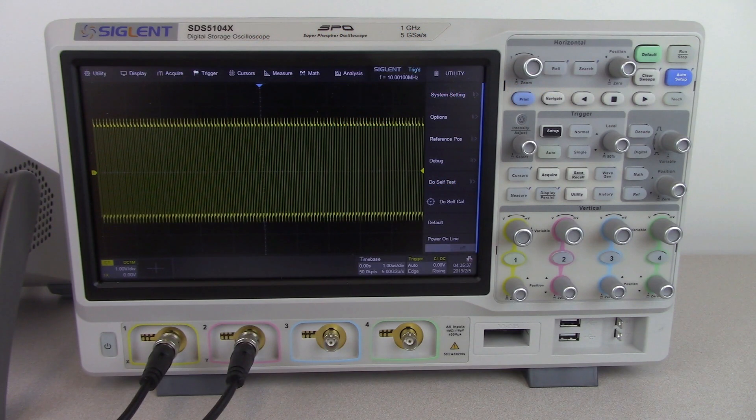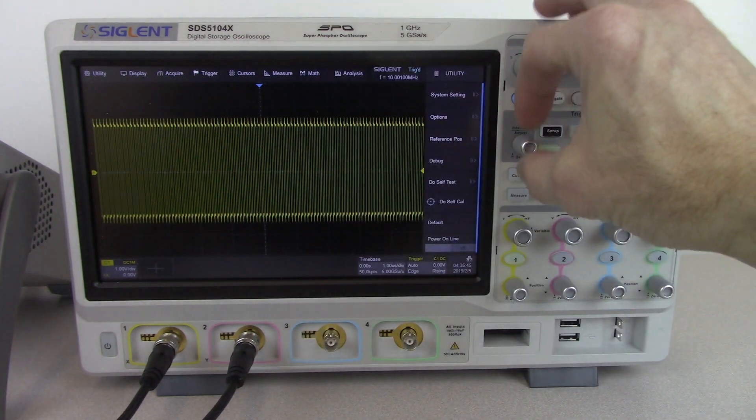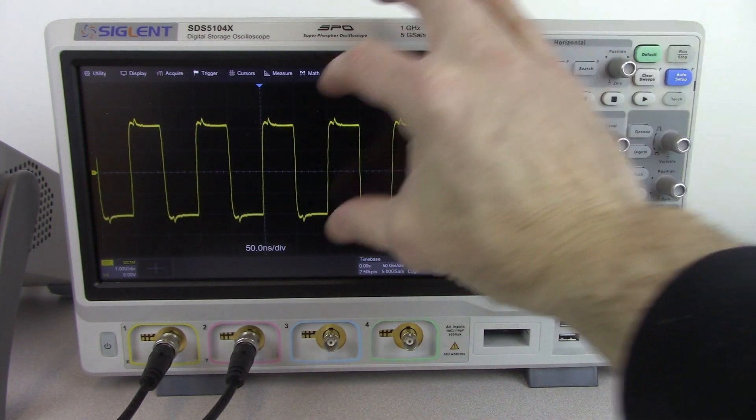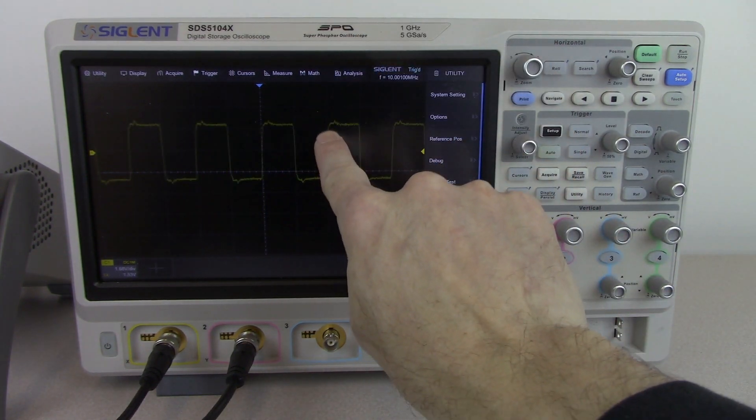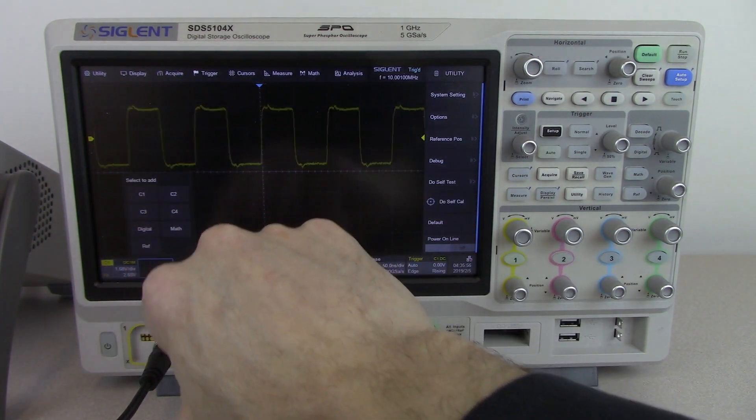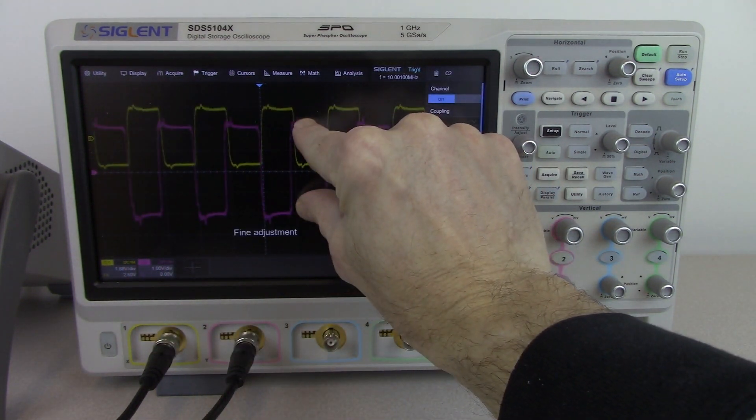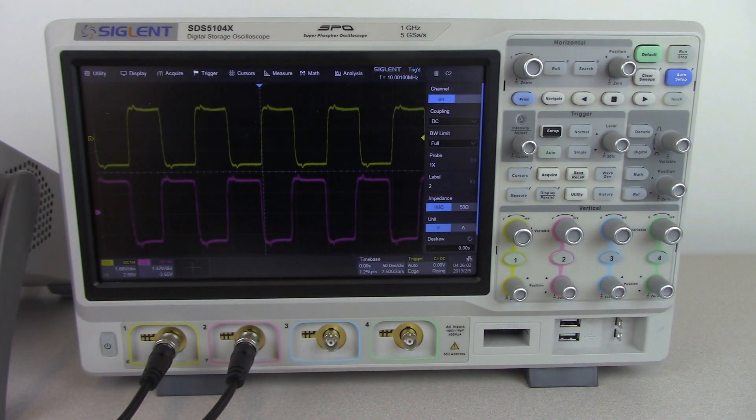I would like to talk a little bit more about the cycle-to-cycle jitter and other measurement statistics that we have on the new 5000 series. In this case, I have a square wave on channel 1 being generated by one of our generators. I'm also going to add channel 2, which is slightly more jittery using a different circuit or technique with our waveform generator.